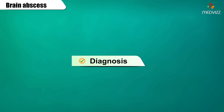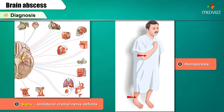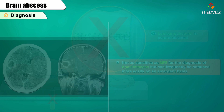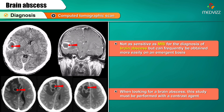Diagnosis: In the setting of focal symptoms such as unilateral headache, or signs such as unilateral cranial nerve deficits or hemiparesis, or the finding of papilledema, a lumbar puncture is contraindicated. CT scan is not as sensitive as MRI for the diagnosis of brain abscess but can frequently be obtained more easily on an emergent basis. This study must be performed with a contrast agent.